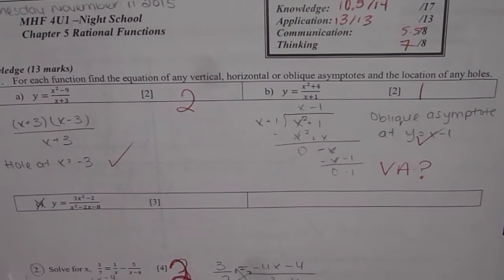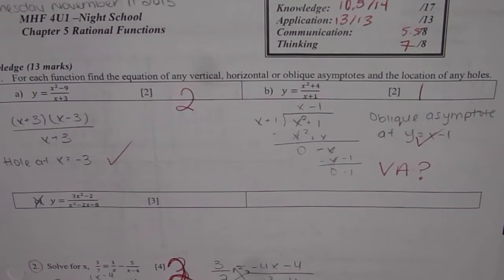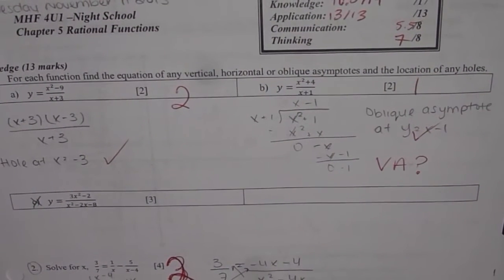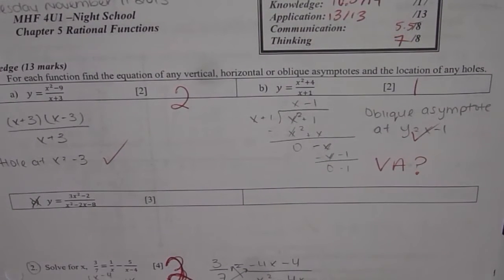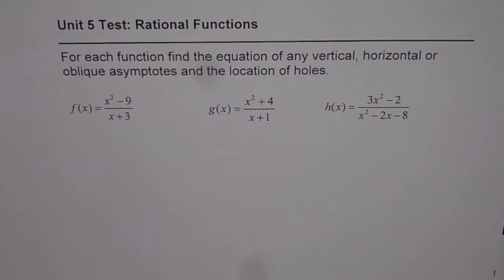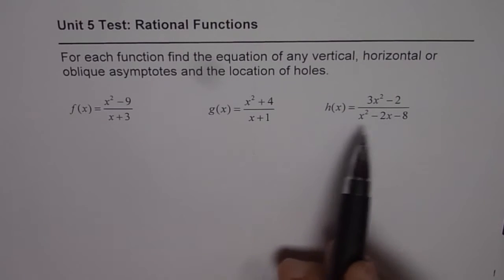I am Anil Kumar and here is a test paper Chapter 5 Rational Functions MHF4U Advanced Functions Grade 12. Now we will discuss each and every question in this test paper. We will start with the very first one which is for each function find the equation of any vertical, horizontal or oblique asymptotes and the location of holes. So we are given three functions here.